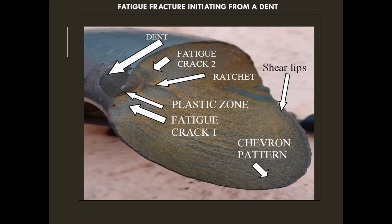This is a fatigue fracture in springs. Here you can see a dent in the spring, which produces a fatigue crack. There are two fatigue cracks meeting at the ratchet, so the ratchet is the midpoint of the two converging fatigue cracks. Fatigue crack 1 and fatigue crack 2 both converge to form a ratchet.